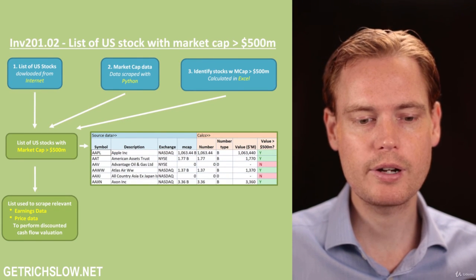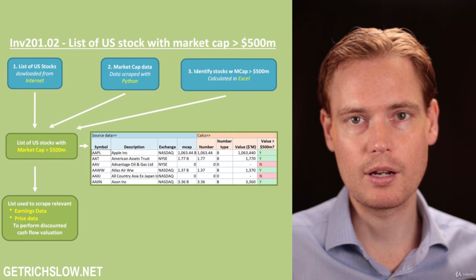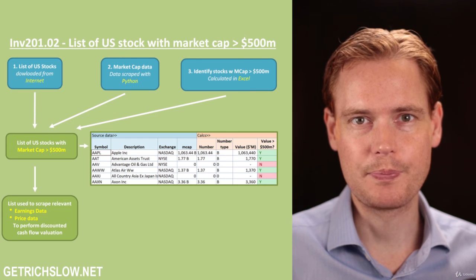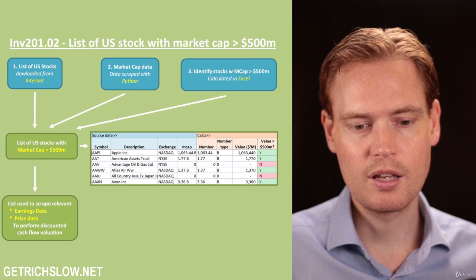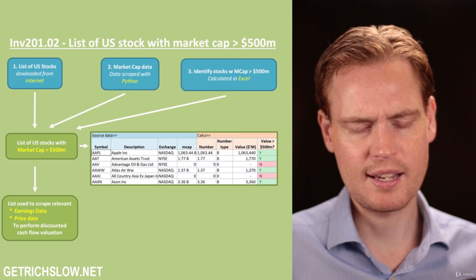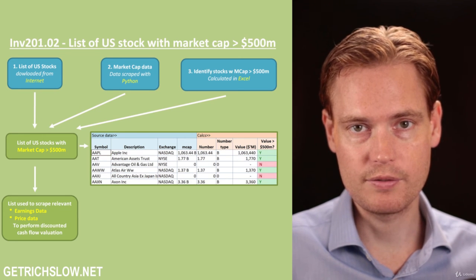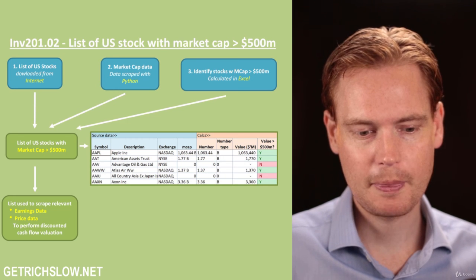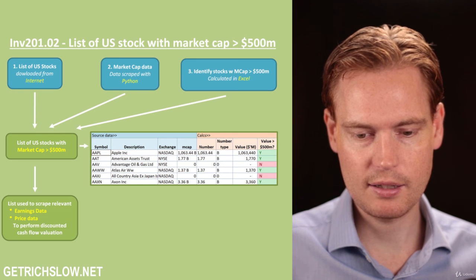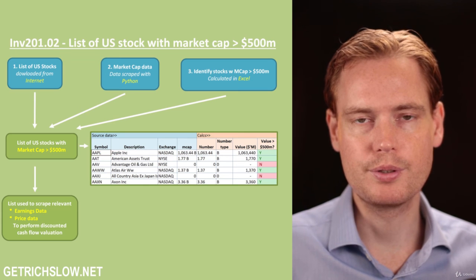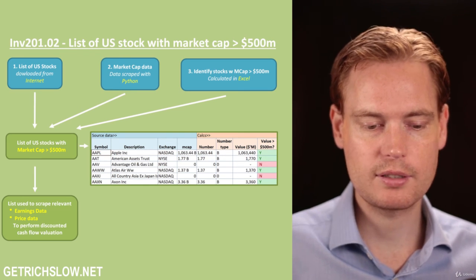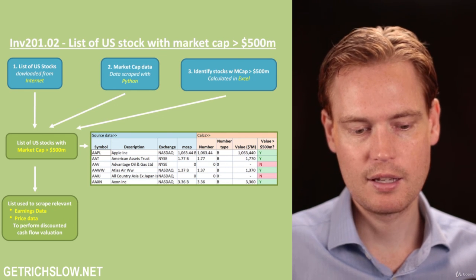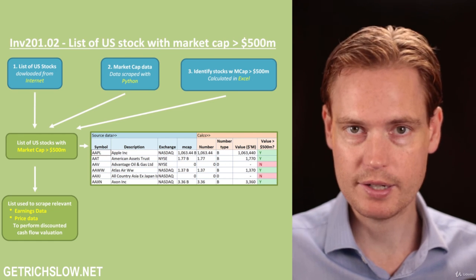In this video we're going to download a list of all the stocks in the US stock market and then sort them to find only those that are greater than 500 million in market cap. We're going to do three things: download a list of all the stocks from the internet, download the market caps using Python, and then write some formulas in Excel to calculate which stocks are greater than 500 million in market cap. That final list is then used to scrape earnings data and price data so that we can do a discounted cash flow evaluation of all the stocks.